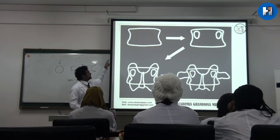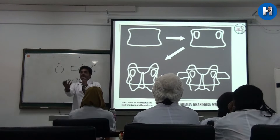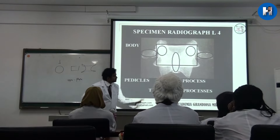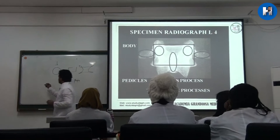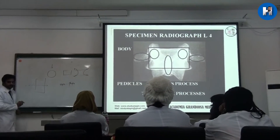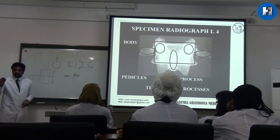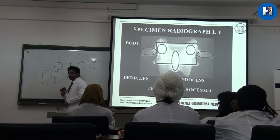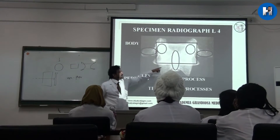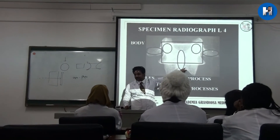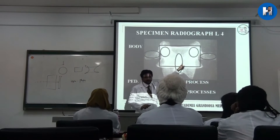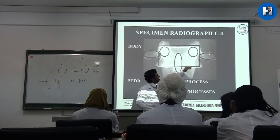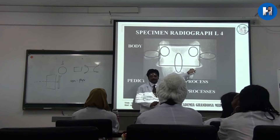What happens when you send the X-ray from anterior to posterior is it traverses all these layers. So once you see the image, you're going to see it this way. Now if the X-ray went this way, the film came like this, you are going to see from posterior. So what will be nearest to you will be the spinous process, then the lamina, then the transverse process.